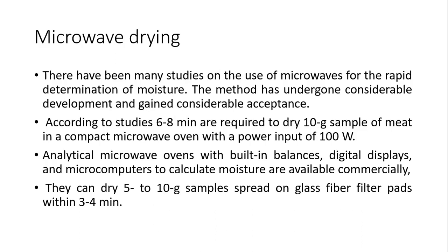Microwave drying has been studied for rapid moisture determination. However, temperature control in microwave ovens is not easy — without it, product spots can burn. The method has undergone considerable development and gained acceptance. According to studies, 6 to 8 minutes are required to dry a 10-gram sample of meat in a compact microwave oven with 100 watts power input — more efficient than infrared. Analytical microwave ovens with built-in balances, digital displays, and microcomputers to calculate moisture are available commercially. They can dry 5 to 10 gram samples spread on glass fiber filter pads within 3 to 4 minutes.